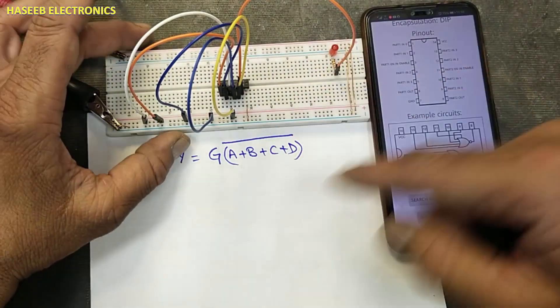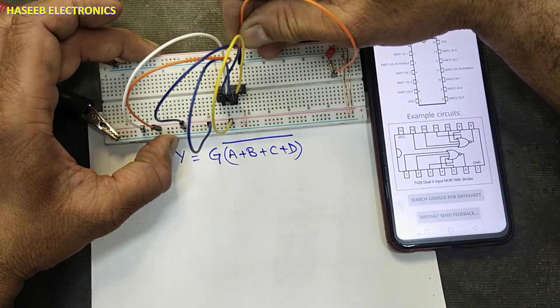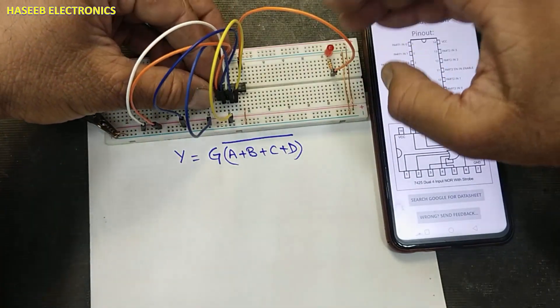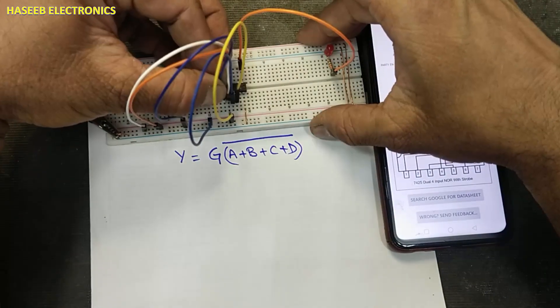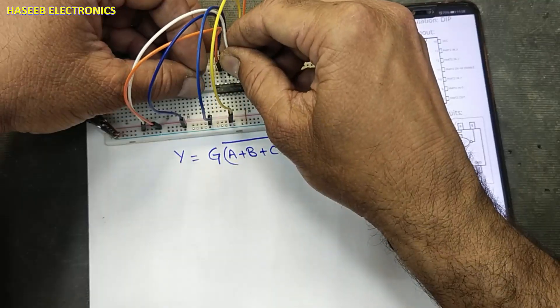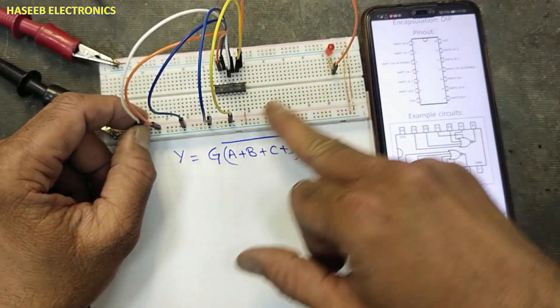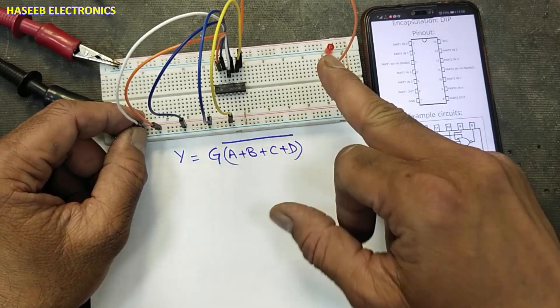Same way, we can check second side. Pin number 8 output. Pin number 9, 10 input. 12, 13 input. 11 strobe. Strobe high. All inputs high. Output low.